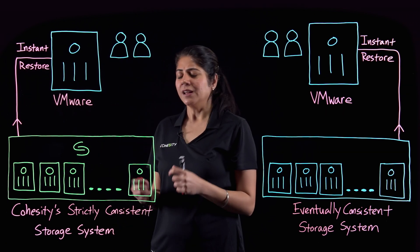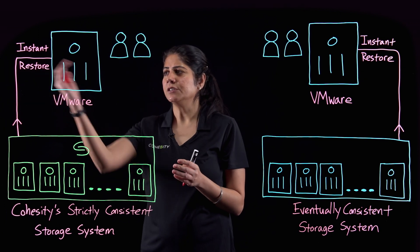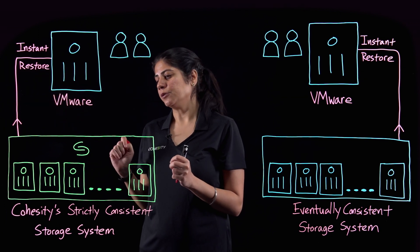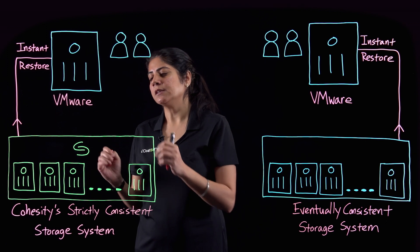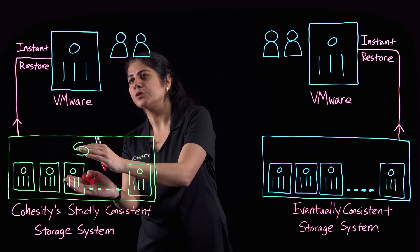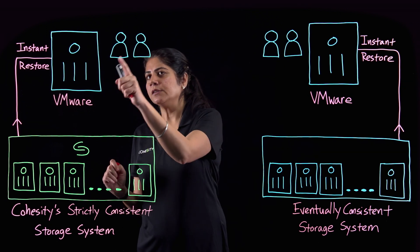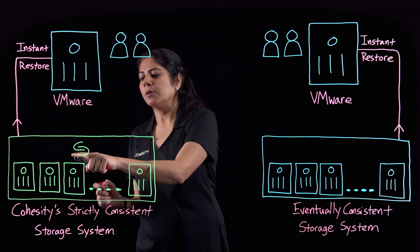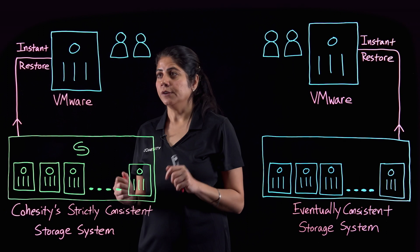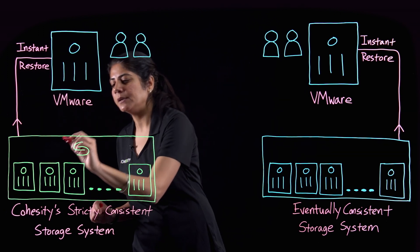Behind the scenes during an instant restore, until the data is entirely copied from the secondary storage to the primary, all user writes are absorbed on the secondary storage. So if a node were to permanently fail while this is happening,